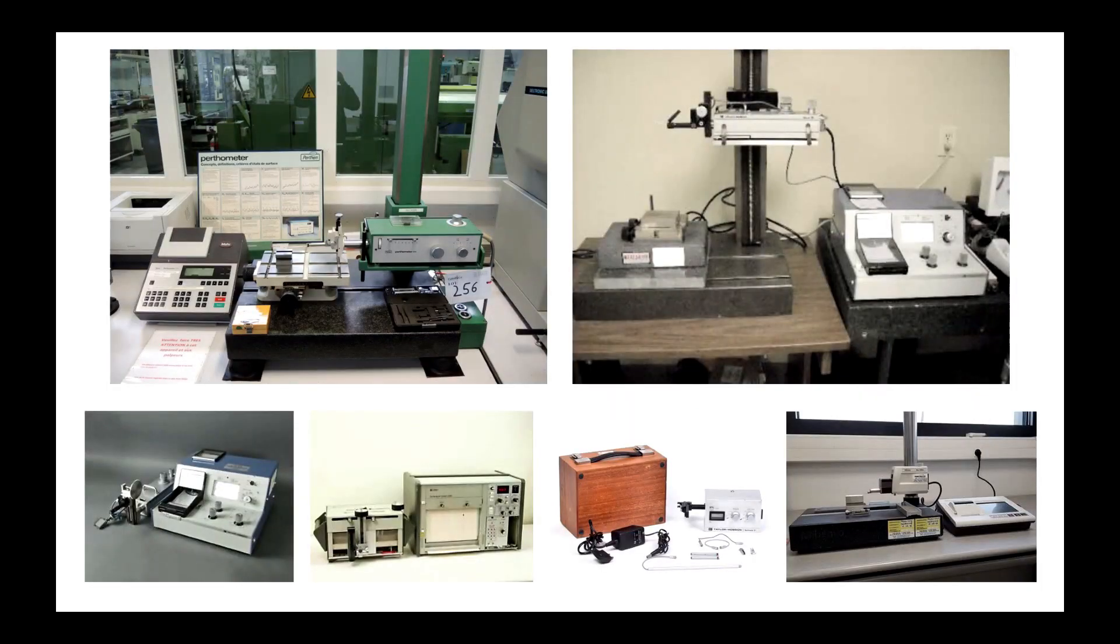Over the years, several manufacturers developed their own profilometers, gradually improving the various elements. Until the 1970s, the profile was drawn on a strip of carbon paper with a stylus which reproduced the profile on the principle of the galvanometer, from the amplified and filtered signal from the sensor.